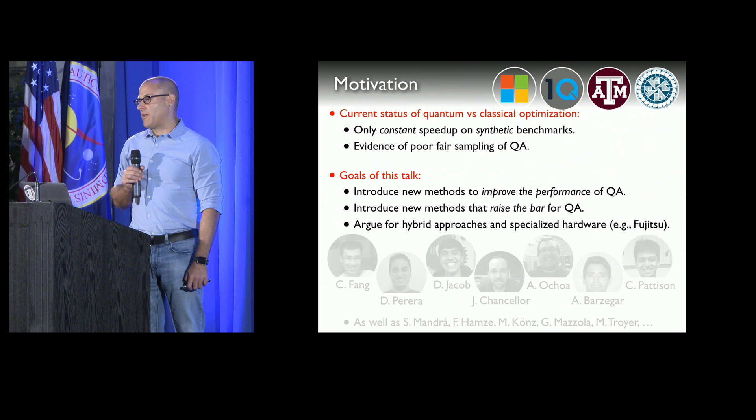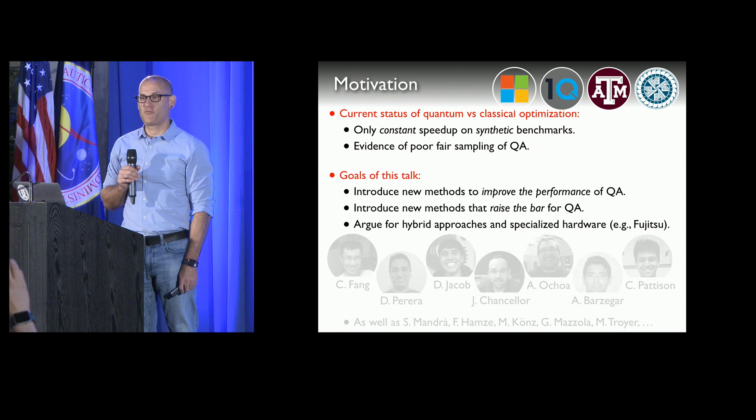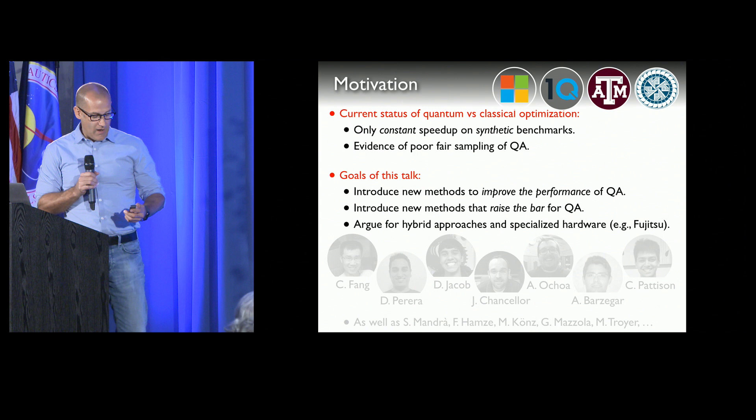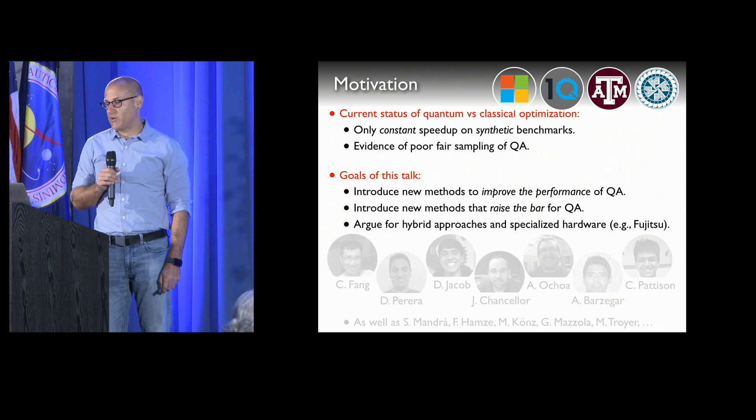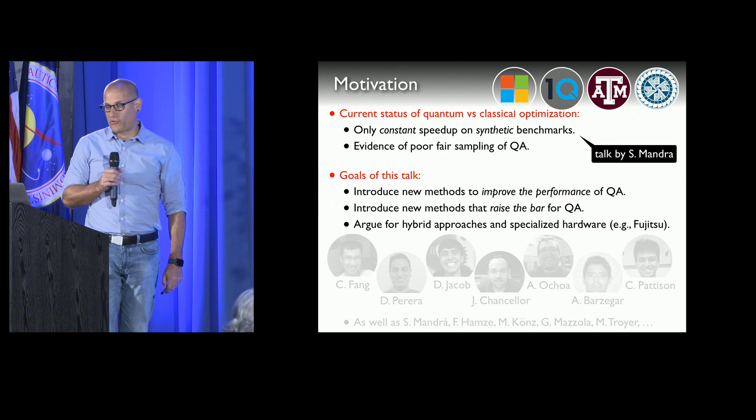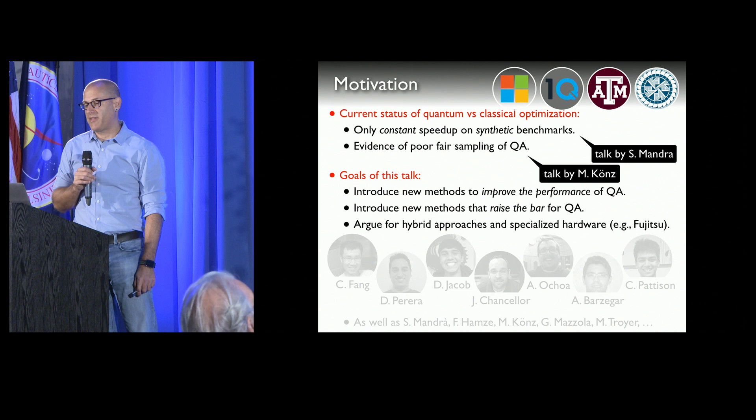This is work done in collaboration with some folks. One thing that surprised me at this conference is that there have been no claims of a new problem that shows definite speedup for any kind of quantum hardware. So far, the best shown is a constant speedup that Salvatore showed this morning for quantum hardware, and what Mario just showed — that there is evidence of unfair sampling for quantum annealing.